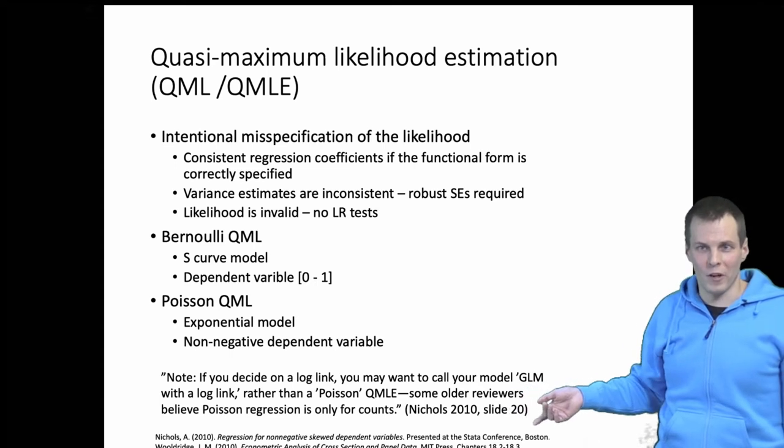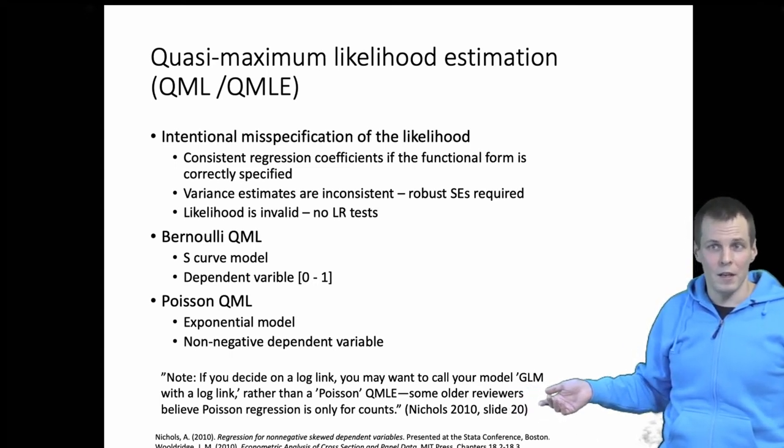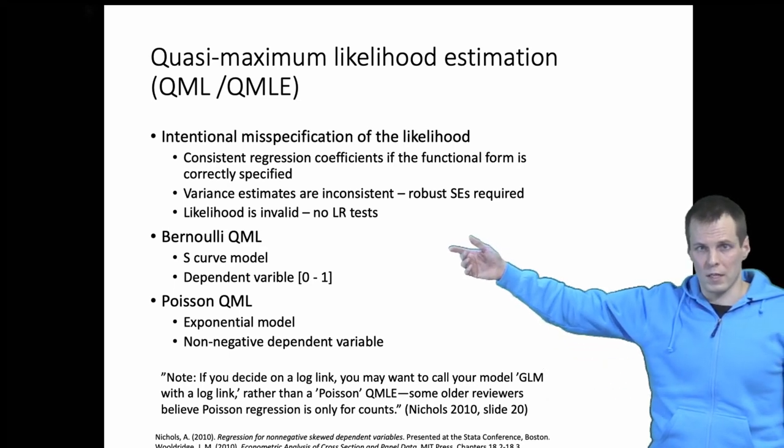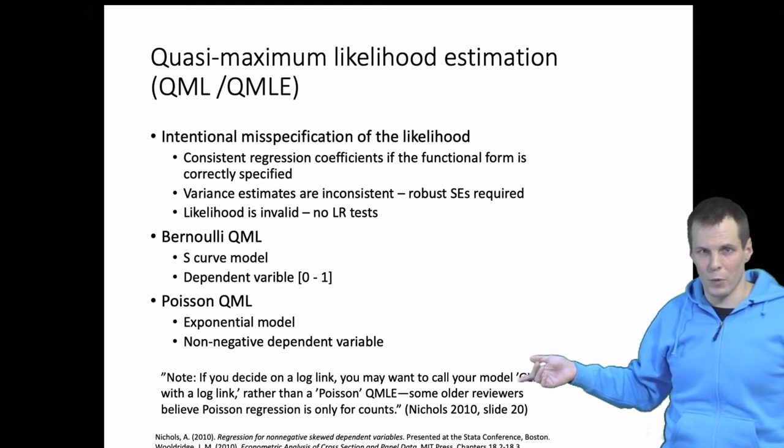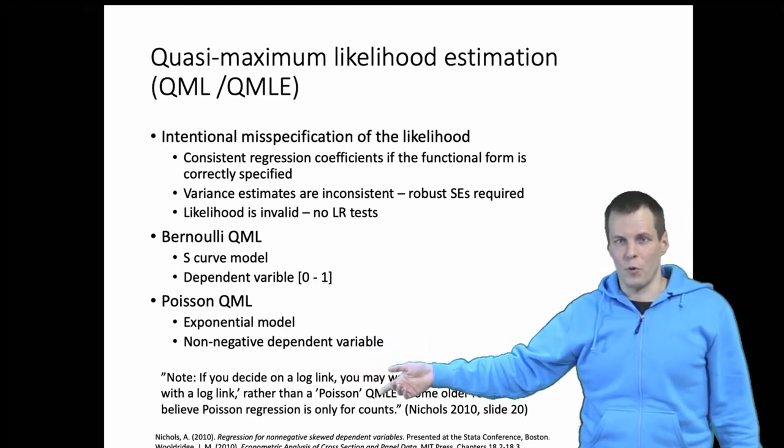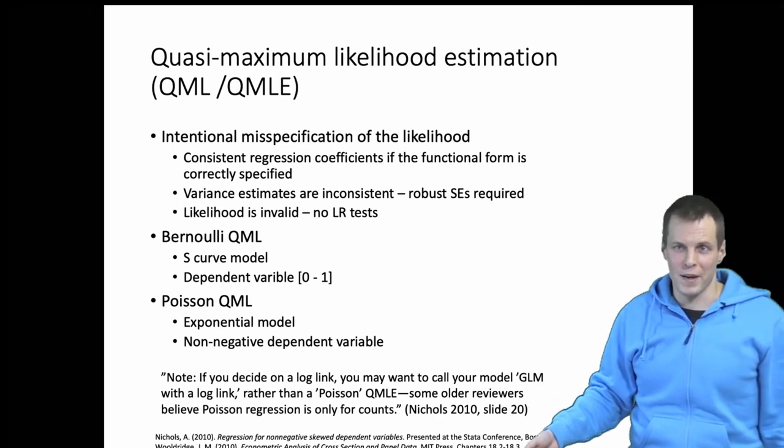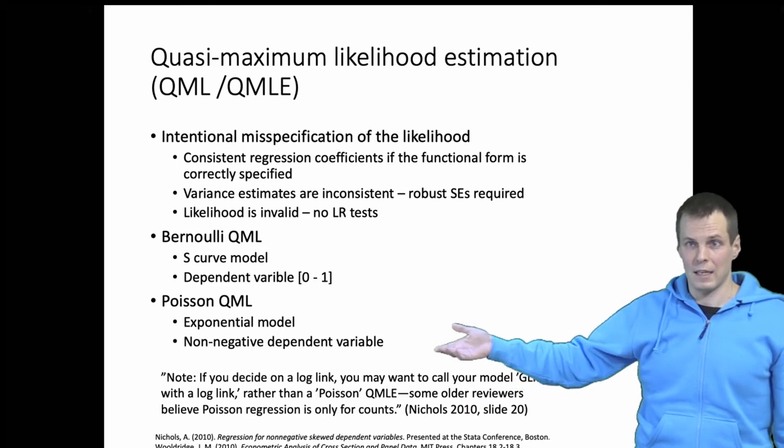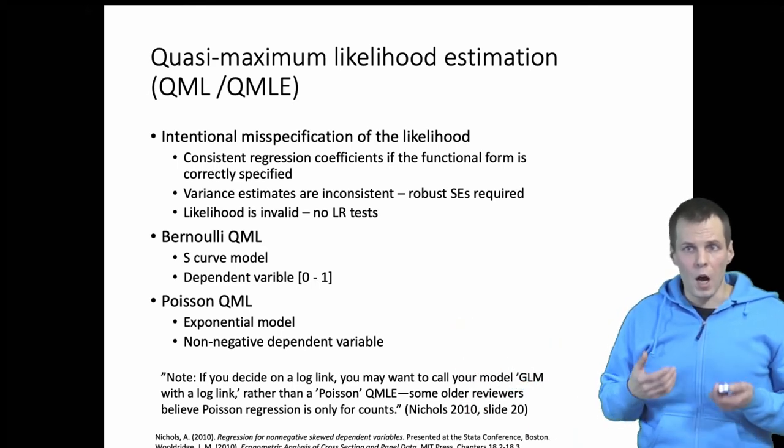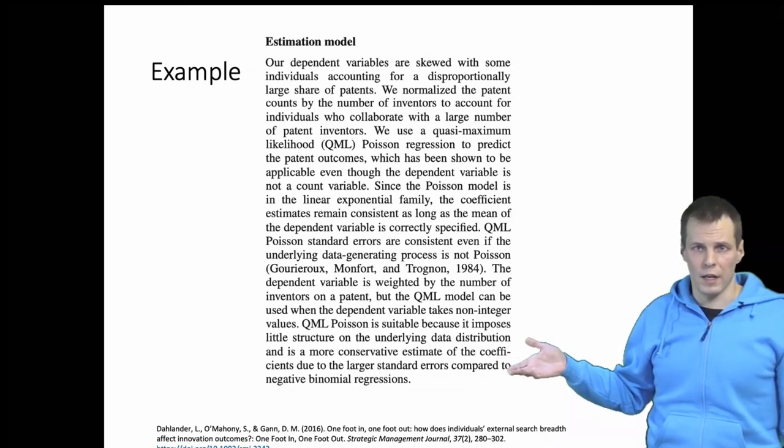And then there's a bit of a tongue-in-cheek statement in the end of his presentation that if you apply Poisson quasi-maximum likelihood estimation or maybe you should call it GLM with a log link instead of Poisson quasi-maximum likelihood estimation because otherwise your reviewers may tell you that you can't use Poisson for non-counts which you just did in your paper. These techniques are becoming more common and this is something of a new idea.